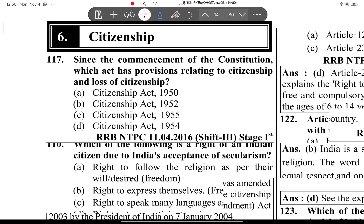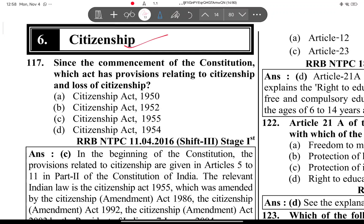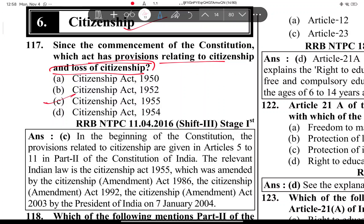Now we will also cover citizenship in this video, since the preamble topic is quite short. Citizenship — since the commencement of the constitution, which act has provisions relating to citizenship and loss of citizenship? The answer is the Citizenship Act of 1955. Actually, I think I should make a separate video for citizenship so it stays organized by topic. So the preamble topic is done. We will make a separate video for citizenship. Thank you so much for watching this video. If you like this video, please subscribe to my channel. Thank you.